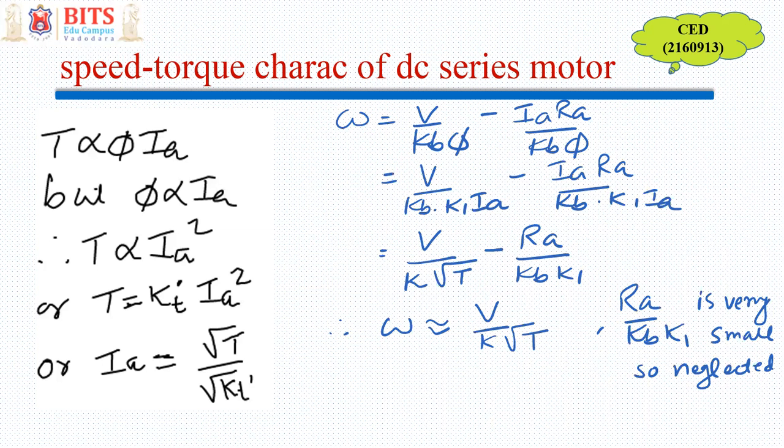The second term is very small. So I can say that it is neglected. So ω is approximately equal to V divided by K square root of T. If voltage is constant in this case, so I can say that speed is inversely proportional to torque. So you have a hyperbolic curve, so the equation suggests that I am going to get a speed versus torque to be a hyperbolic curve for DC series motor.